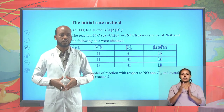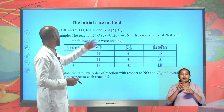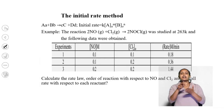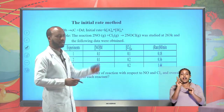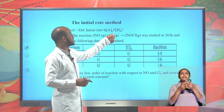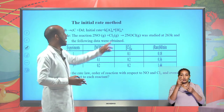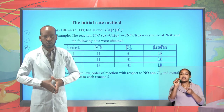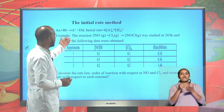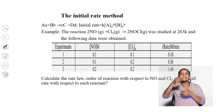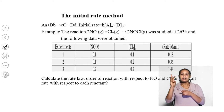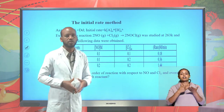If you are ready then we will get started. The initial rate method for the reaction aA plus bB to form cC plus dD: initial rate equals K, where K is the rate constant, times initial concentration of A to the power of m, times initial concentration of B to the power of n, where m and n are obtained experimentally. For example, the reaction 2NO(g) plus Cl2(g) to form 2NOCl(g) was studied at 266 Kelvin, and the following data were obtained experimentally.